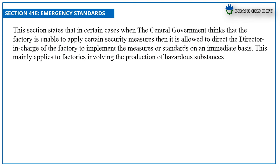Section 41E: Emergency Standards. This section states that in certain cases, when the central government thinks that a factory is unable to apply certain security measures, then it is allowed to direct the director in charge of the factory to implement the measures or standards on an immediate basis. This mainly applies to factories involving the production of hazardous substances.